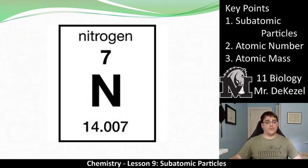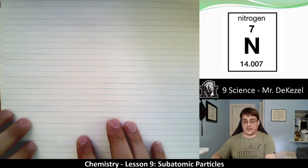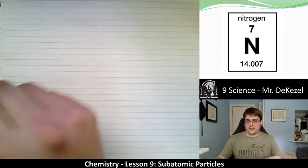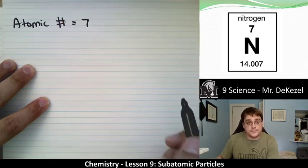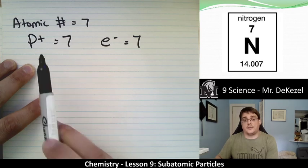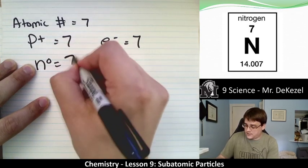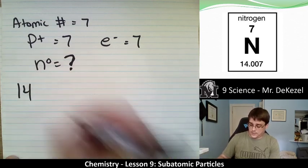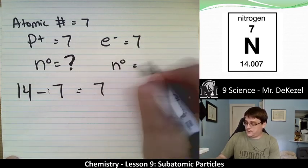Let's do an example with nitrogen. The atomic number is 7, so protons equal 7 and electrons equal 7. To find the neutrons, we take the atomic mass of 14 and subtract the atomic number of 7. 14 minus 7 equals 7. Therefore, nitrogen has 7 neutrons.